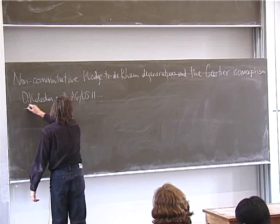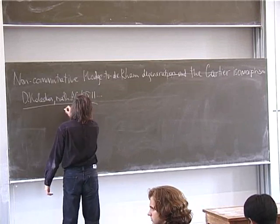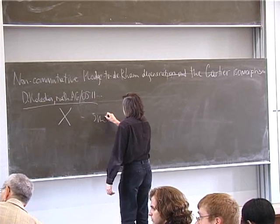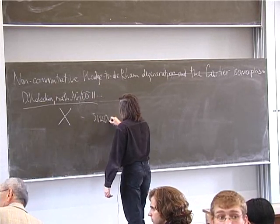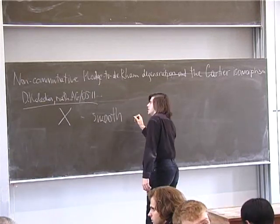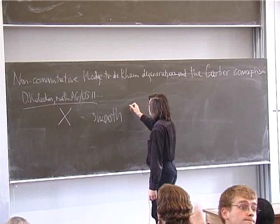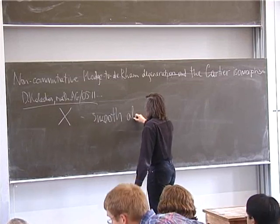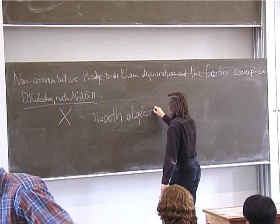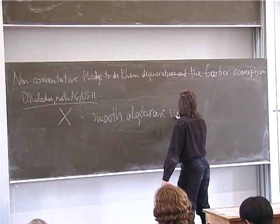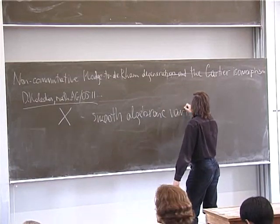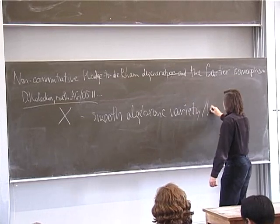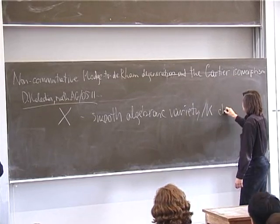So the setup is as follows. We have some X which is just a smooth algebraic variety over some field k of characteristic zero.